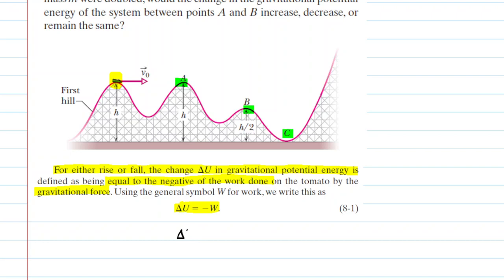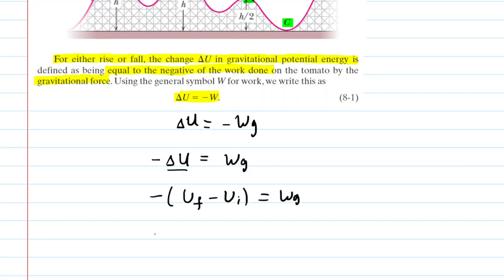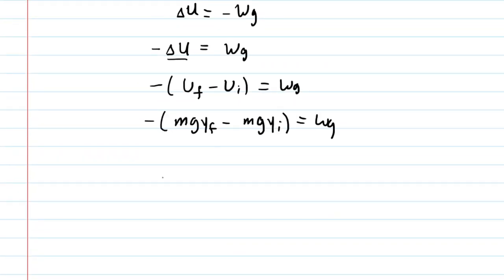We can simplify this by changing W to the work done by gravity, adding a subscript G, then dividing both sides by negative 1. So, the negative of the change in gravitational potential energy equals the work done by the gravitational force. Expanding delta U as final minus initial, we get negative MG times the final height minus the initial height — after factoring out MG. This expression will allow us to calculate the work done by gravity in the first three parts of the question.